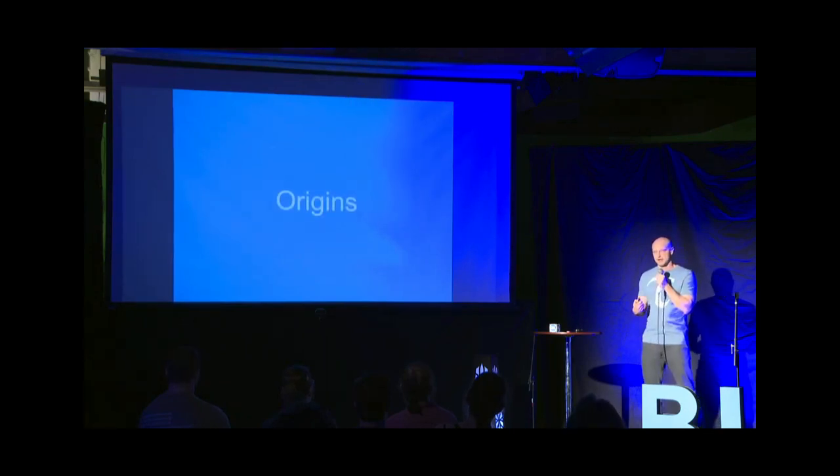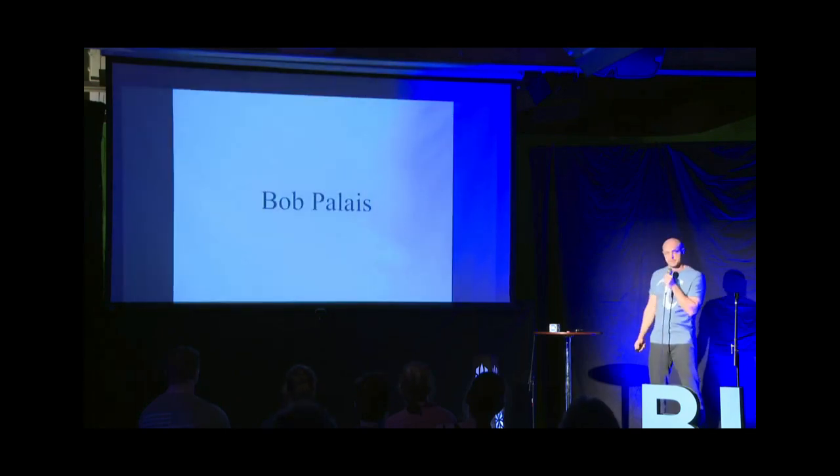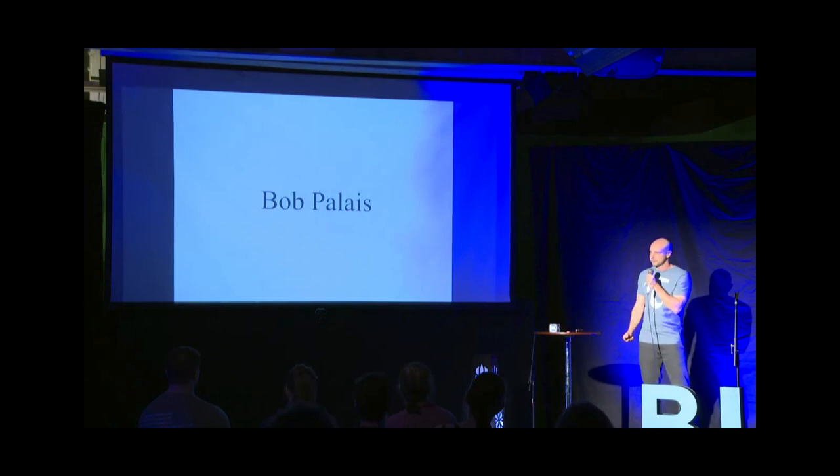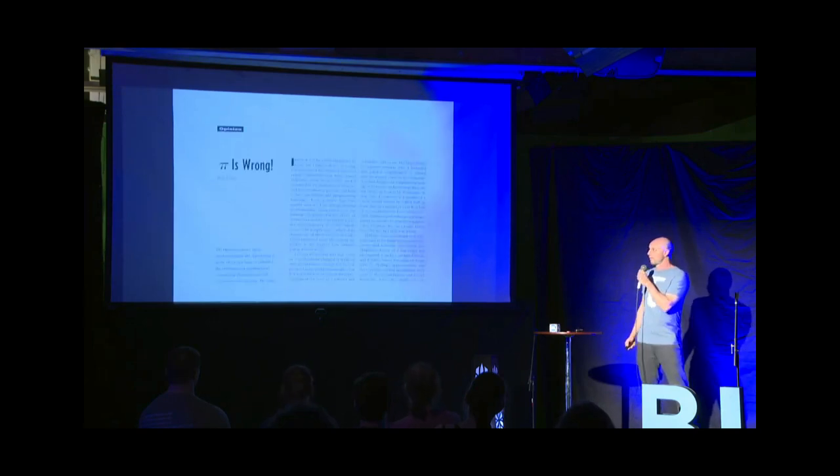Now, the first person in the modern era to notice this problem that I know of is a mathematician named Bob Palais at the University of Utah. In 2001, he published an article called Pi is Wrong.